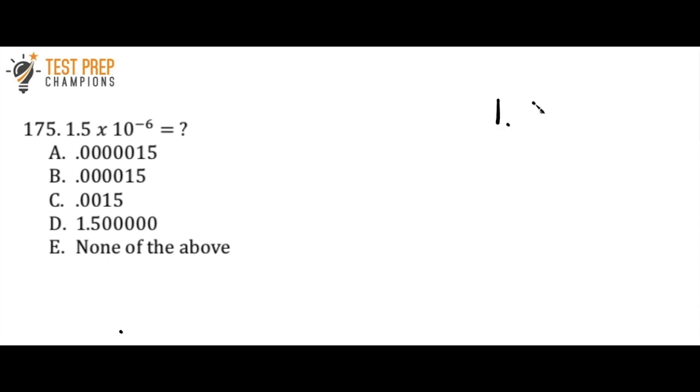Okay, so there are again two ways to think about a question like this. The first would be to just start wherever the decimal is. In this case, it's between the 1 and the 5. And I'm just going to move it to the left 6 places. So I would go 1, 2, 3, 4, 5, 6. And then I just go back and I fill in my zeros. So I would have 1, 2, 3, 4, 5 zeros.